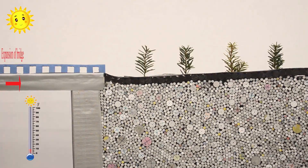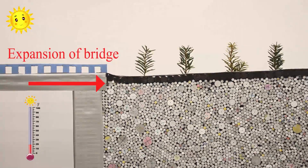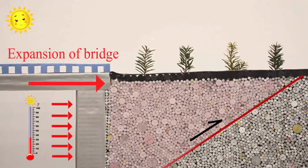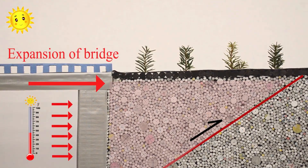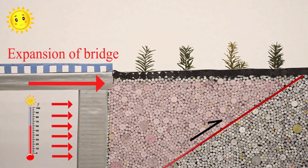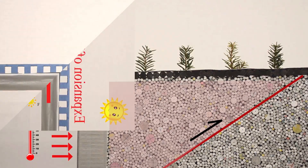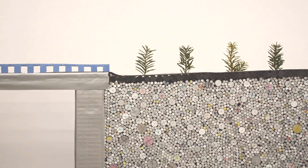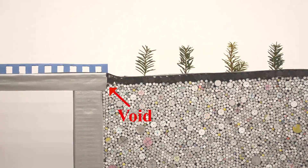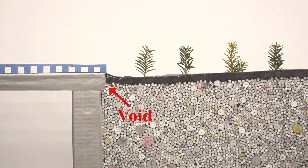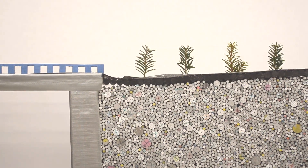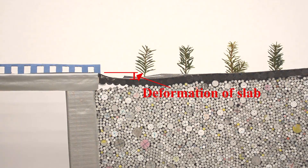During the summer season, the bridge expands with increasing temperature, causing the abutment and retained soil to move outward. Because of the inelastic nature of soil, the abutment and now deformed soil may not move back to its original position. The combination of these seasonal changes can cause a net inward displacement, leaving a void between the slab and the soil. Over time, continued traffic loading can cause the slab to deform, leaving a bump at the end of the bridge.